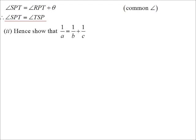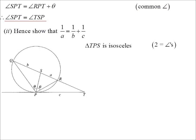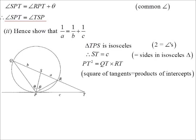Here was the interesting bit of the question. Hence, show that one on a is equal to one on b plus one on c. Let's put the diagram back in. We're going to need that to work this one out. TPS, we now know is an isosceles triangle. So ST is also little c. I could name it that way. Square of the tangent is equal to the product of the intercept. So PT squared, end point of the chord to the point of intersection times end point of the chord to the point of intersection.